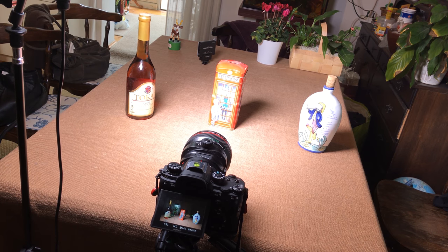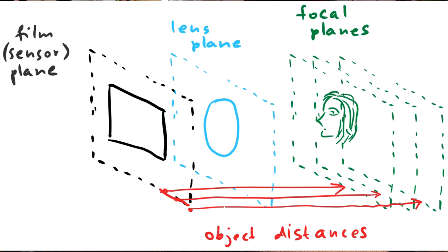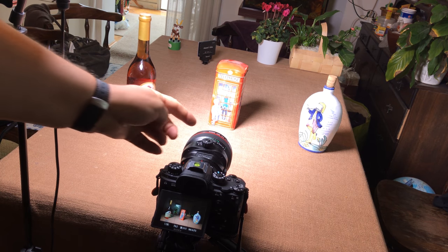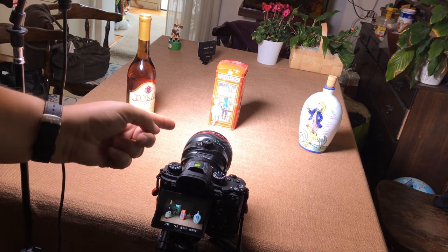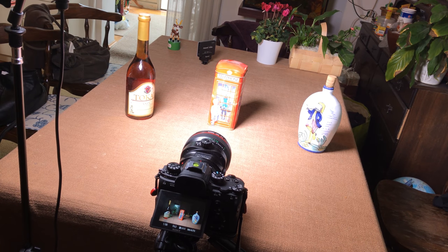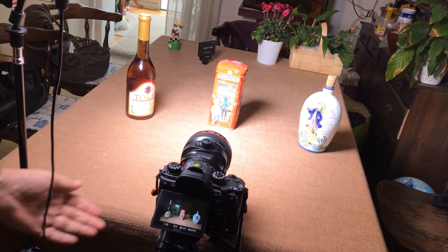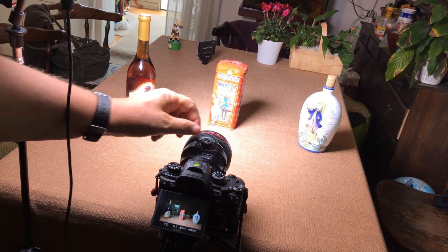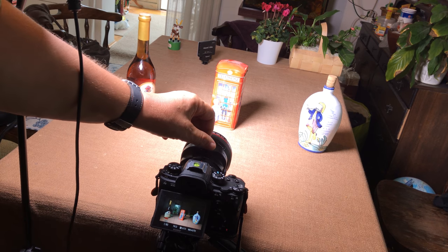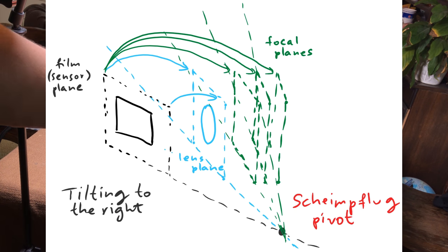This is a demonstration of the Scheimpflug movements on a tilt-shift lens. This is my Canon TSE 17mm tilt-shift lens, and the Scheimpflug is practically the tilting part of this lens.